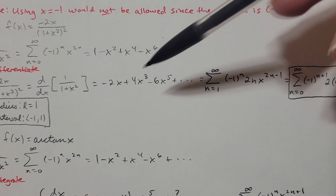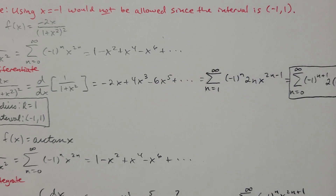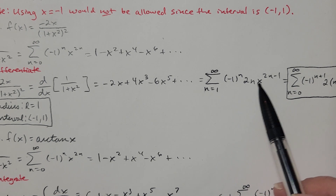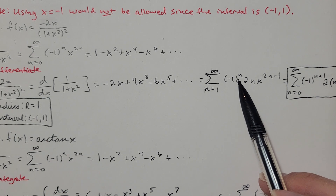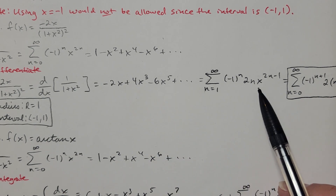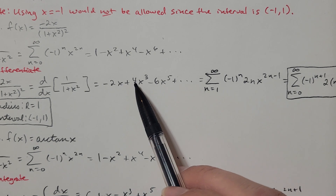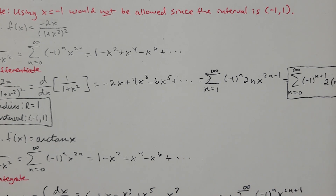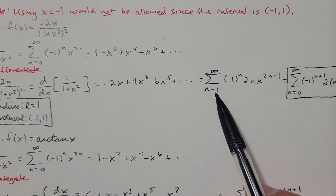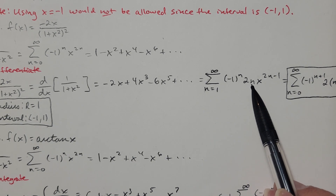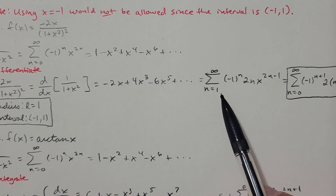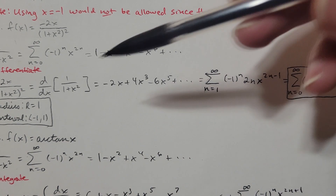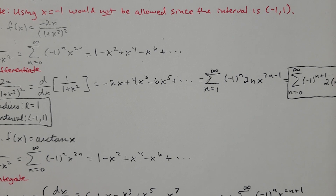Just to verify term by term: when n=1, we have -2x as the first term; when n=2, we have 2·2=4 times x³; then -6x⁵, and so on. I have to start at 1 because if n were 0, the first term would be 0, but the actual first term is -2x, so starting at 0 would be incorrect.